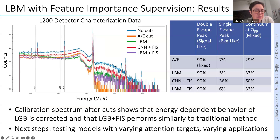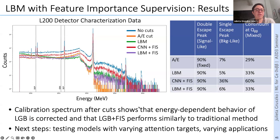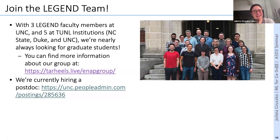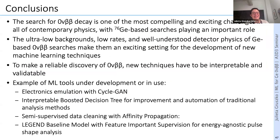Testing on multi-site event rejection, the RNN with feature importance supervision performs as well or slightly better than traditional multi-site rejection. Without FIS, the RNN appears to perform very well but creates a huge energy bias — the network distinguishes Compton continuum events at different energies that should look identical topologically. By adding FIS, we recover flat inability to distinguish based solely on energy, eliminating the bias while keeping good multi-site rejection performance. We're always looking for new graduate students and are currently hiring a postdoc, so get in touch.